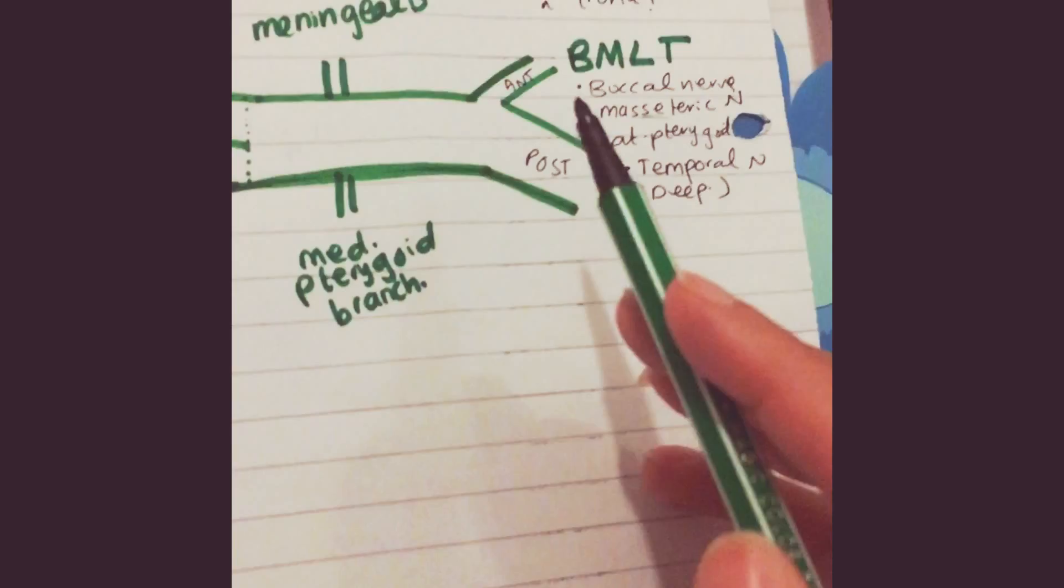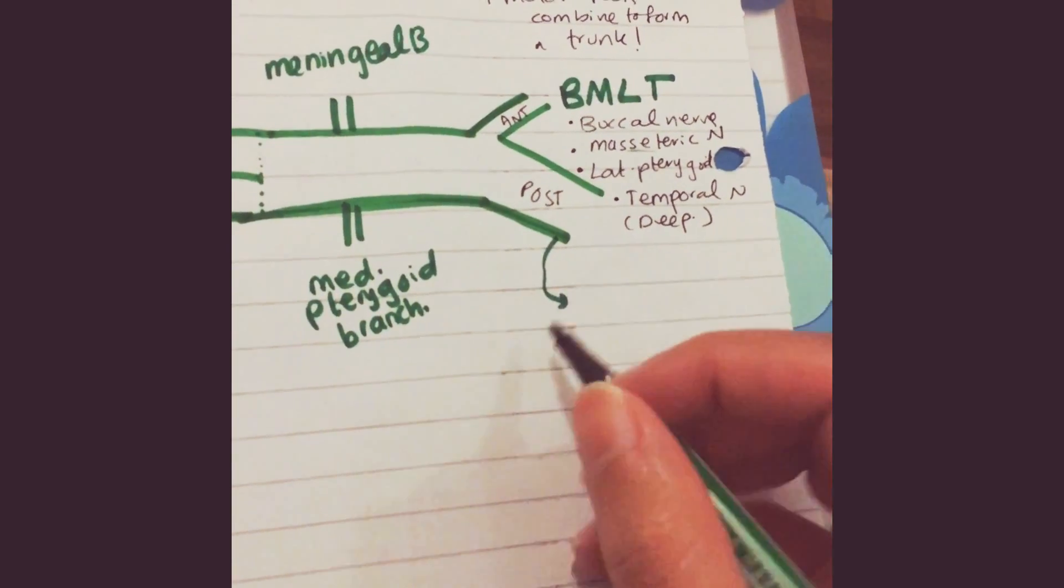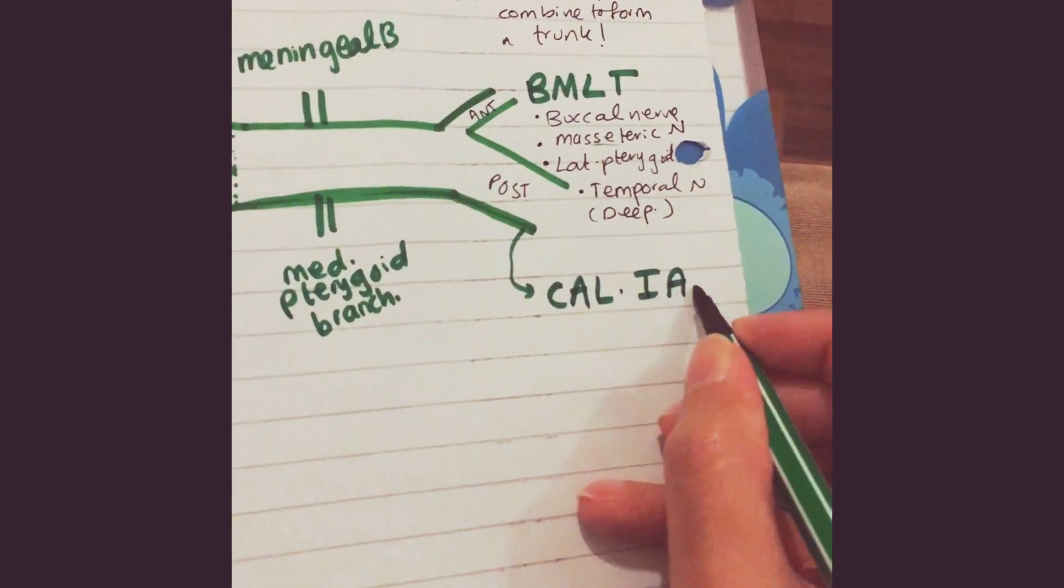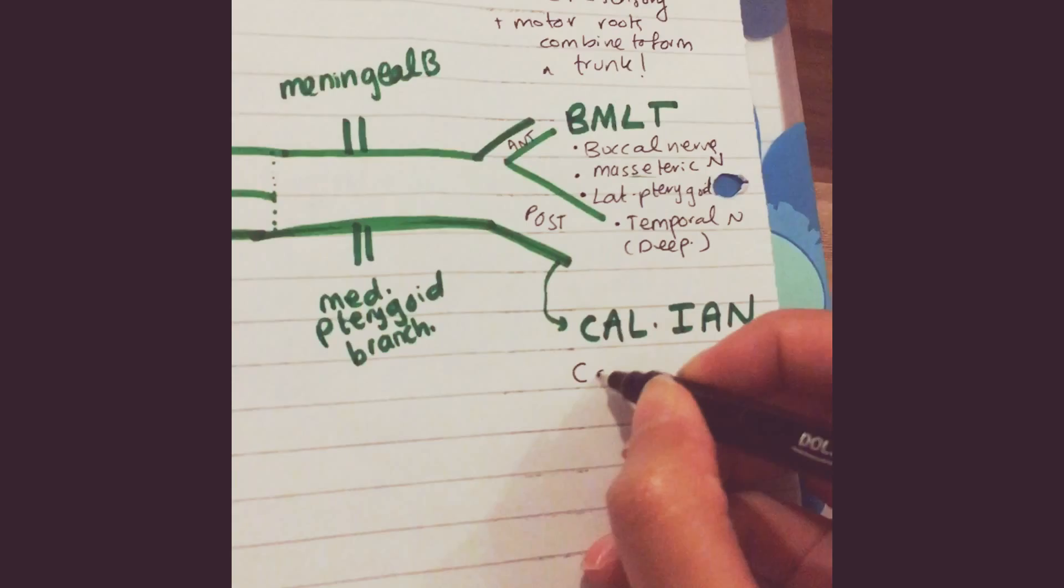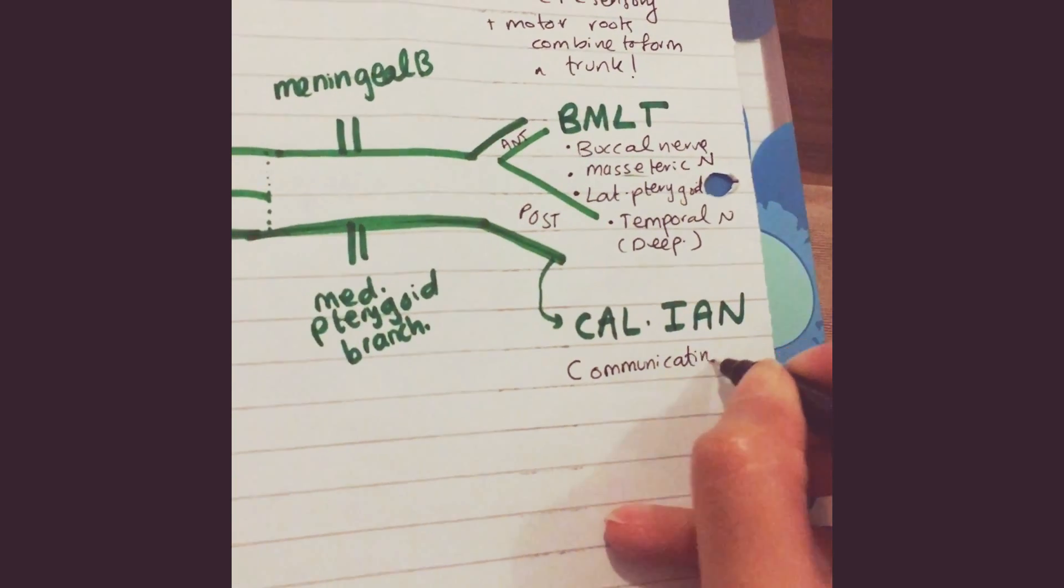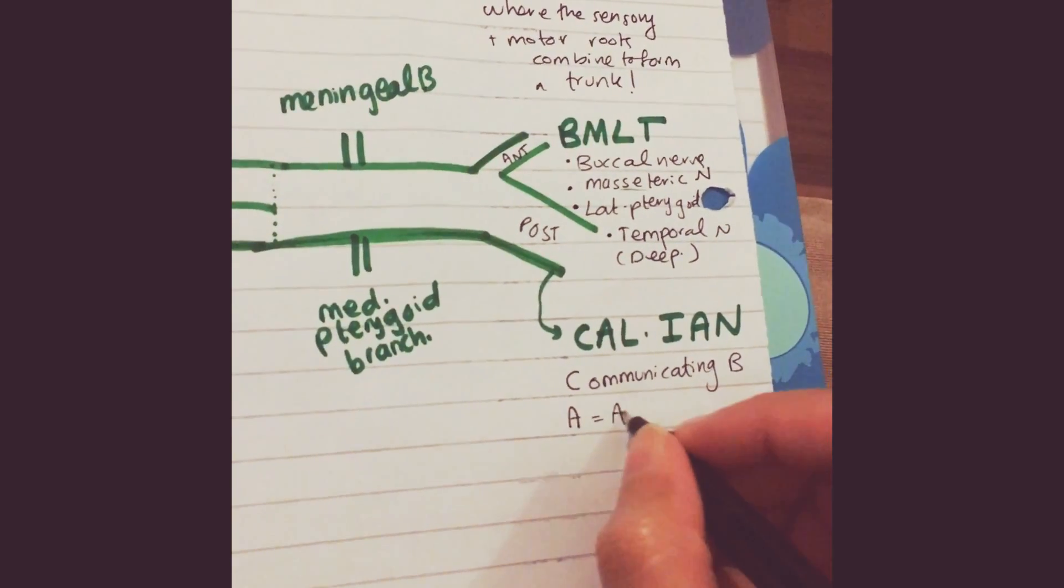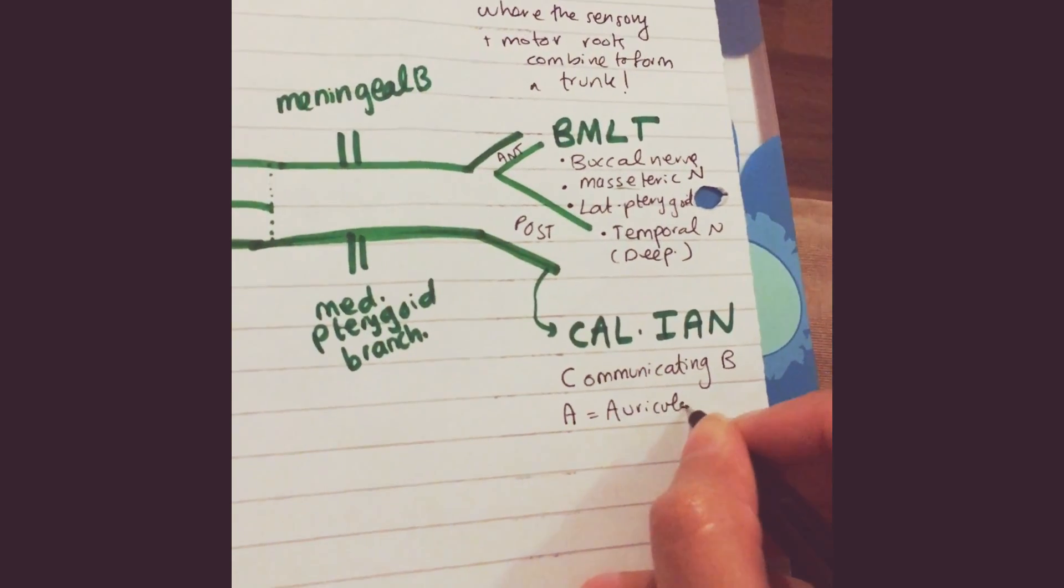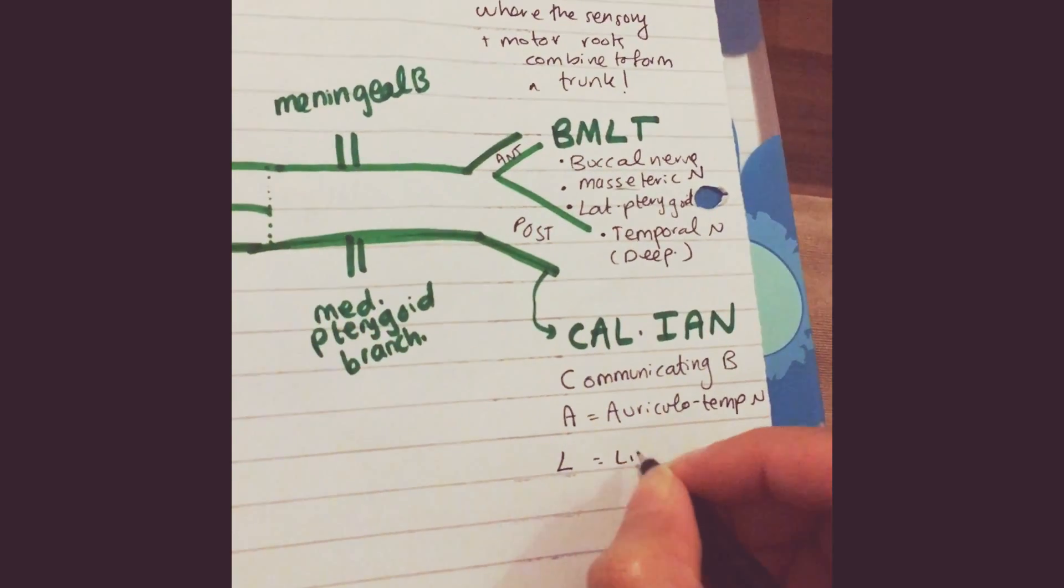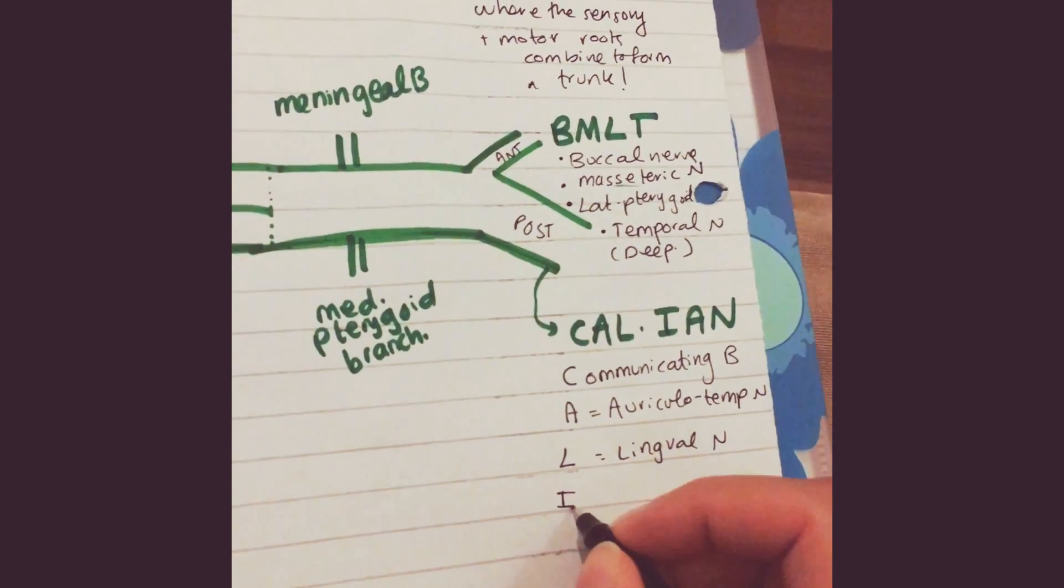Now the posterior portion—it's quite easy. You're going to learn this by CALIAN. C is your communicating branch, A is your auriculotemporal nerve, L is your lingual nerve, and I...